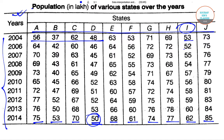Reading the population values for state I across the years: 53, 52, 55, 54, 57, 56, 58, 59, 60, 62. So 52 is the lowest value.